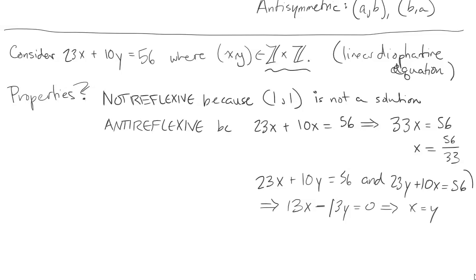Well, we've just seen that x and y cannot be equal in the solution to this equation. So since that's not possible, this equation is not symmetric. It's impossible for us to have (x,y) and (y,x) be a solution at the same time. And for that reason, it is anti-symmetric.